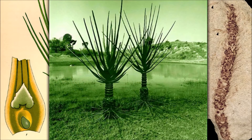Nathorstiana's leaves and reproductive organs are unknown, but it is generally regarded as a lycophyte and part of a series of plants that gradually reduced in size between the Triassic Pleuromeia and the living Isoetes.